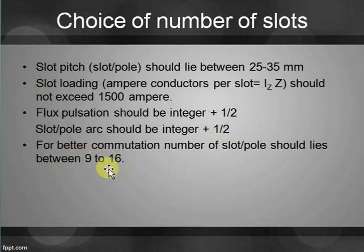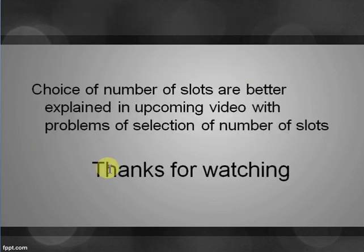Number of Slots per Pole should lie between 9–16. Thanks for watching. The Choice of Number of Slots will be better explained in the upcoming video with problems on the selection of Number of Slots.